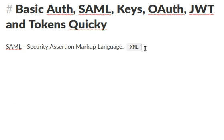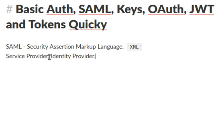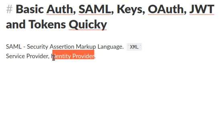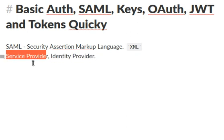SAML talks about a Service Provider and an Identity Provider. The Service Provider is the one that gives you the service — say, a bookstore. The Identity Provider is the one with whom you prove your identity. We do an exchange of XMLs between the parties to prove identity, so you can authenticate to the service. They are decoupled: the Identity Provider is worried about identity, and the Service Provider is worried about giving service.